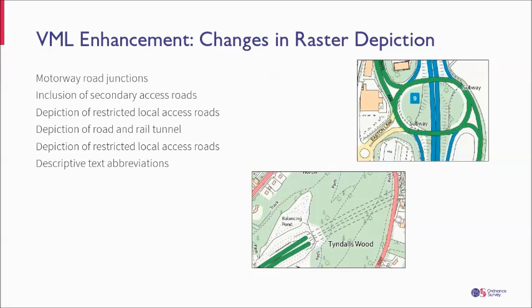There are also changes to the raster version of the product in terms of how features are shown. We've got some major examples around road and rail features mostly, which are just depicted in clearer ways with some different styling, such as motorway road junctions, secondary access roads and some of the tunnels as well. You'll notice those look different on the rasters, and we've also tried to make better use of descriptive text abbreviations to improve how the rasters look and their usability.